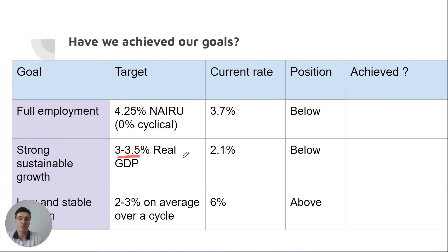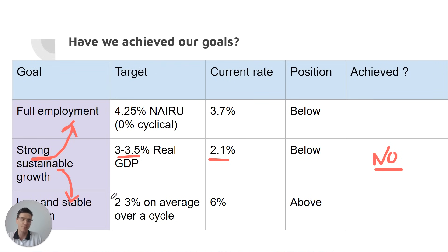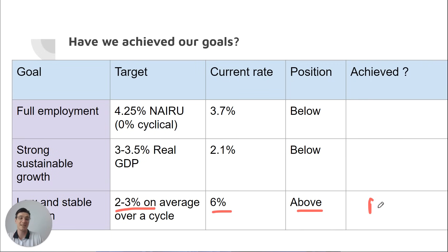For strong and sustainable growth, the target is 3% to 3.5% real GDP. It's currently 2.1%, so it's below — the answer would be no, although you could make an argument that it's being strong enough to create jobs, but not sustainable. For low and stable inflation, we want 2% to 3% on average. It's 6%, it's above — it's definitely a no. We have not achieved our goal of low and stable inflation.